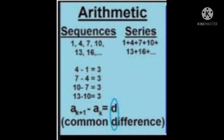Before discussing Arithmetic Progression, we want to know the difference between a sequence and a series. Here a number pattern is given: 1, 4, 7, 10. All these numbers are separated by commas, so this pattern is known as a sequence — a sequence means a number pattern separated by commas. A series, on the other hand, looks like 1 + 4 + 7 + 10 + etc., where the numbers are separated by a plus sign. That is the difference between sequence and series.